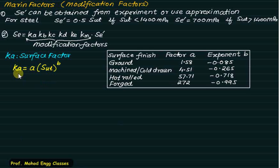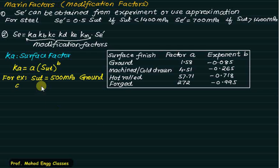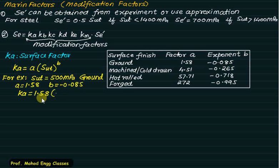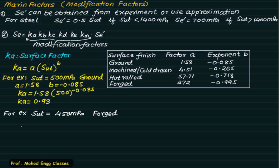Constants A and B are found in the data book for various surface finishes. For ground finish, A = 1.58 and B = −0.085. For example, with SUT = 500 MPa and ground finish: KA = 1.58 × 500^(−0.085) = 0.93. For SUT = 400 MPa with forged finish (A = 272, B = −0.995): KA = 272 × 450^(−0.995) = 0.62. Ground finish represents fine finish, while forged represents coarse finish.